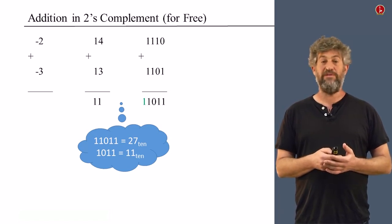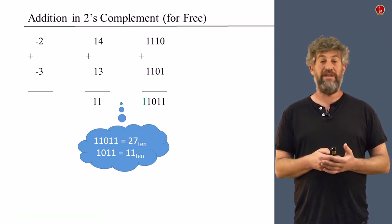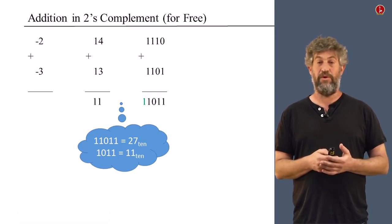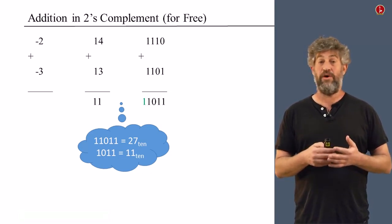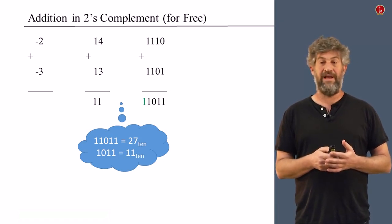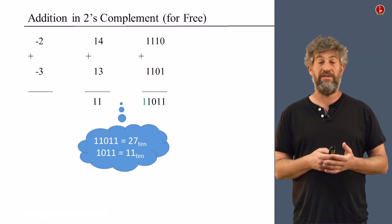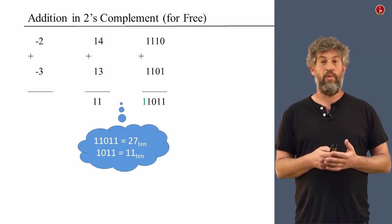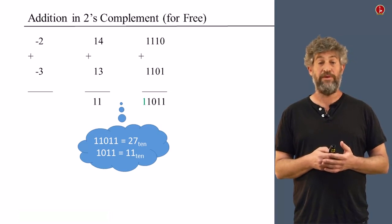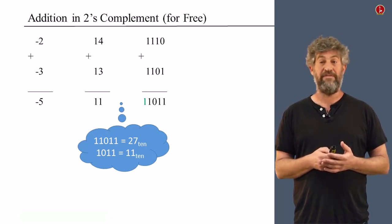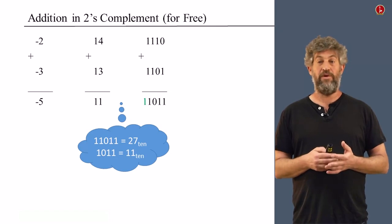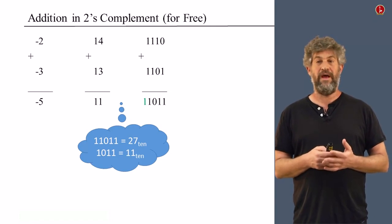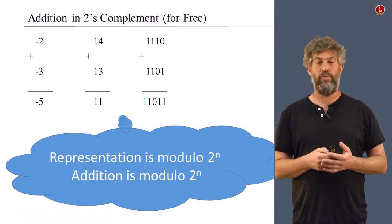The original result without throwing the carry bit is really the number 27, which is what it should be, the sum of 14 and 13. Once we threw that away, we lost 16 because the next bit that was thrown away equals 16. So what we get is only 11. Basically what our hardware computed was that 14 plus 13 equals 11. What is nice about 11? Well, 11 in 2's complement really represents the number negative 5, and this is exactly what we needed to do. So amazingly, we got the correct result without doing anything new.